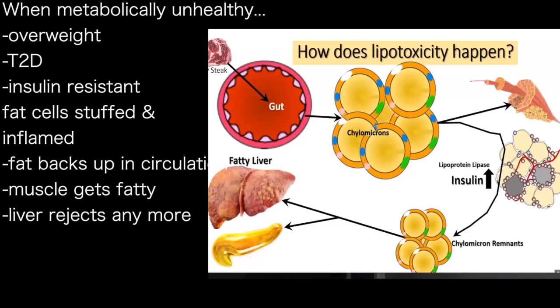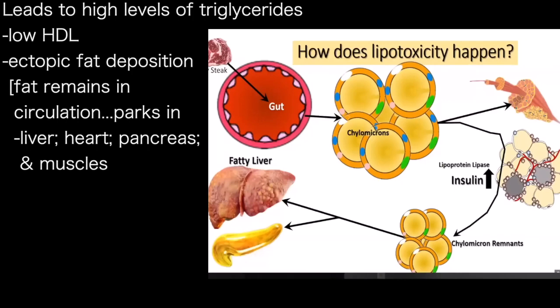So the fat backs up in the circulation. The muscles can take only so much fat — and by the way, you will see that our muscles can also get fatty. So they refuse to accept fat, so fat backs up in the circulation. The liver similarly will say it can't take any of these fat globules or the remnants, so they also hang in circulation. The way you know that is that you will have high levels of triglycerides, low levels of good cholesterol, and a series of other blood markers that I will explain.